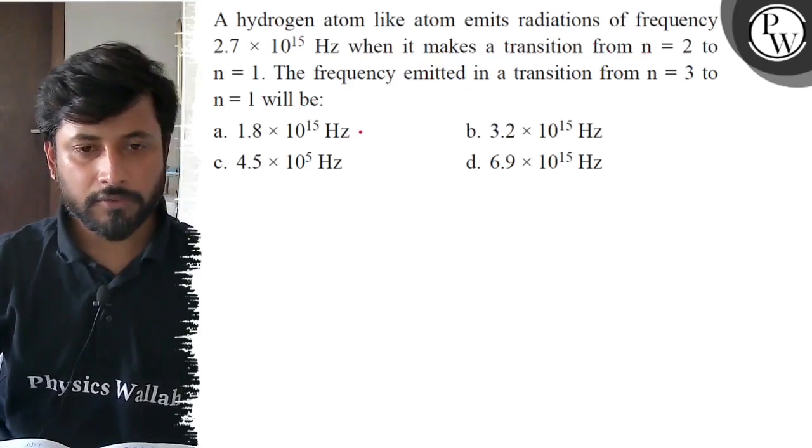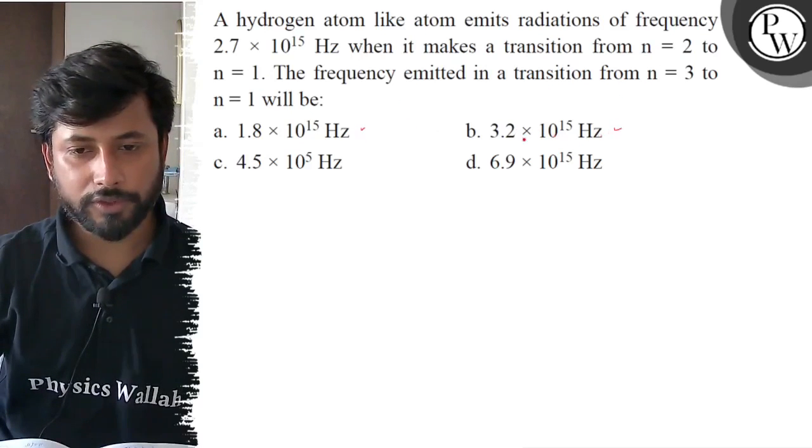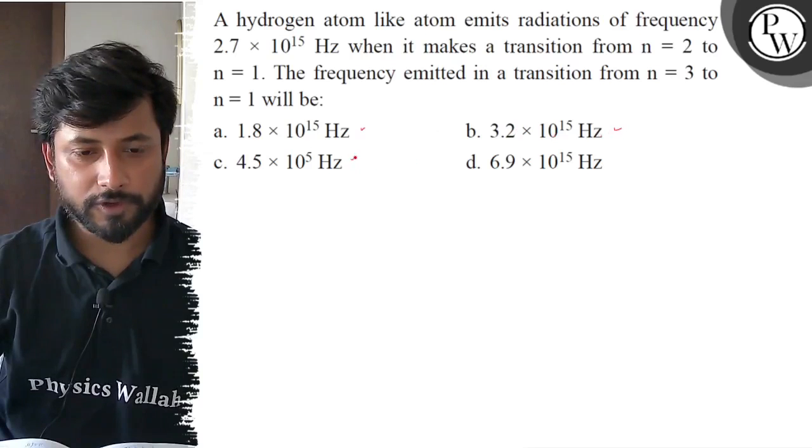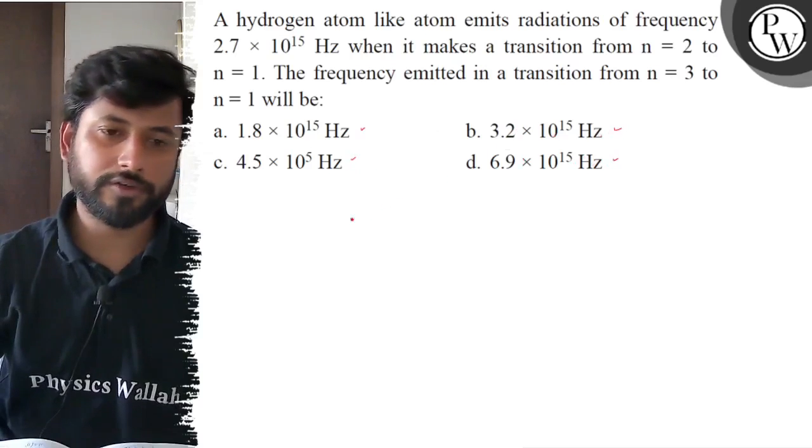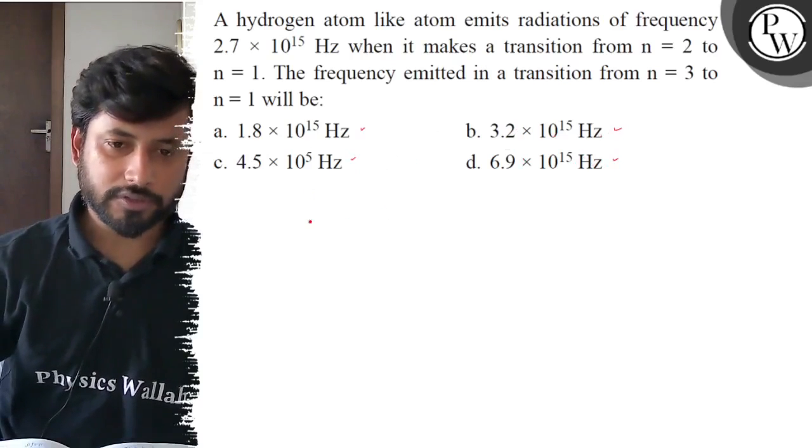Option A, 1.8 into 10 to the power 15. Option B, 3.2 into 10 to the power 15. Option C, 4.5 into 10 to the power 5. Option D, 6.9 into 10 to the power 15. Okay, so let's start.